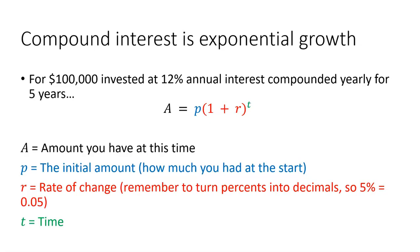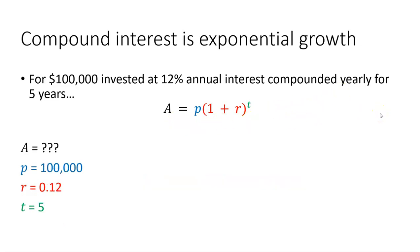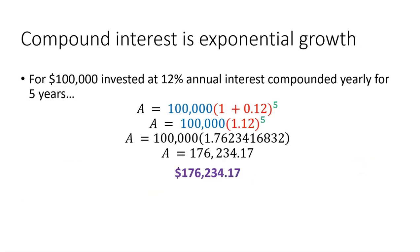Compound interest is an example of exponential growth. Look at the scenario we just explored: $100,000 invested at 12% annual interest, compounded yearly. When you see 'compounded yearly,' that means it's done once a year, probably at the end of the year, for five years. Here's our familiar exponential growth formula, and these are the values we need to plug in. We start with $100,000; the interest rate of 12% is 0.12 as a decimal; and the time is five years. Plugging those in leads us to $176,234.17.